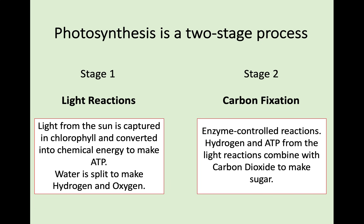Stage 1 is known as light reactions. This is because light energy is used extensively through stage 1. Basically, the light from the sun is captured in the chlorophyll, then converted into chemical energy in order to make ATP, which is the energy required for the rest of these processes. At the same time, water is split in order to make hydrogen and oxygen.